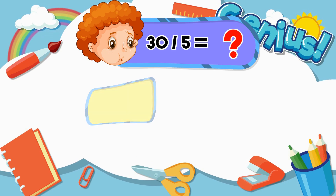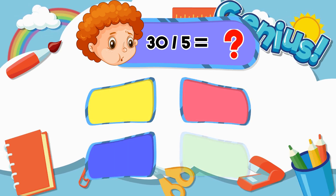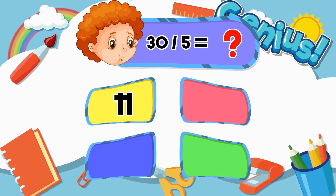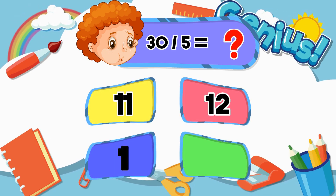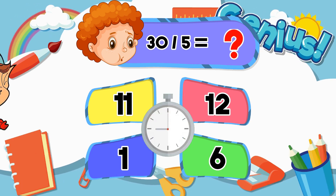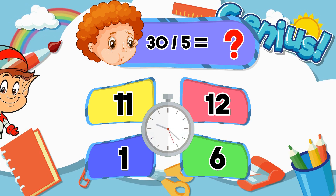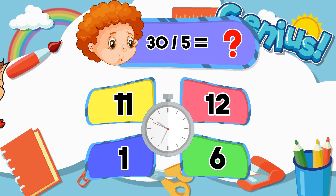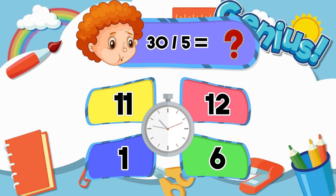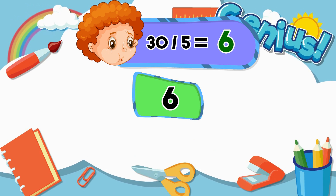What is 30 divided by 5? 11, 12, 1, 6. Answer: 6.